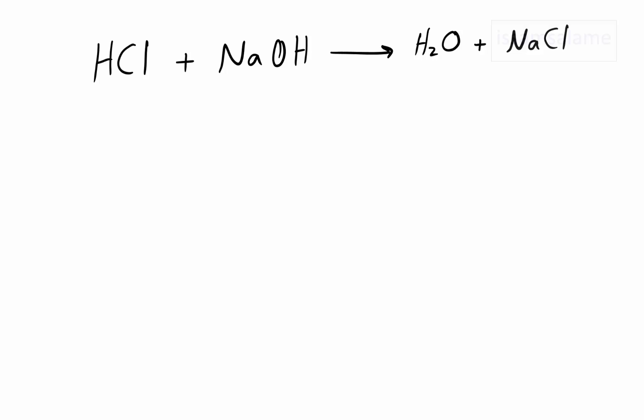Let's start with our first example. We have a chemical reaction and want to know which element is oxidized and which is reduced. To do this, we first find the oxidation number for all elements in the reaction. It is very important to watch my previous video about how to find the oxidation number, which I will link in the description below.